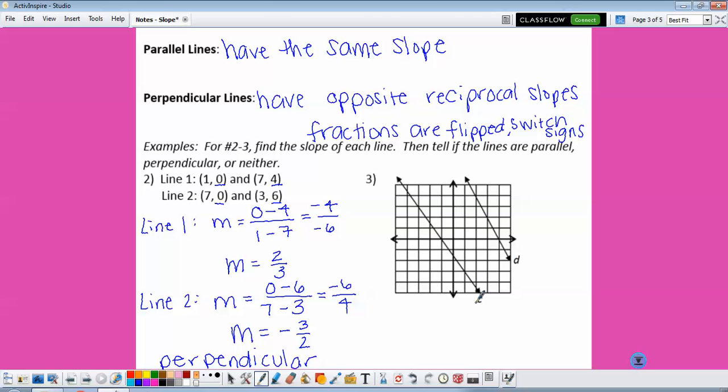When we're given the picture of the lines, we can count the slope on the graph. So I'm going to find two nice coordinate points on line C. And slope is rise over run. So M would equal, we go up 3 and left 2, so that would be negative 3 halves.